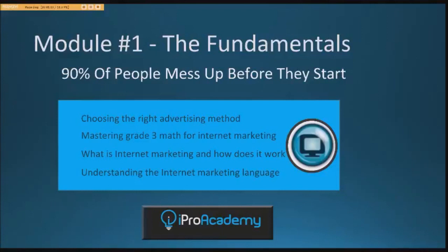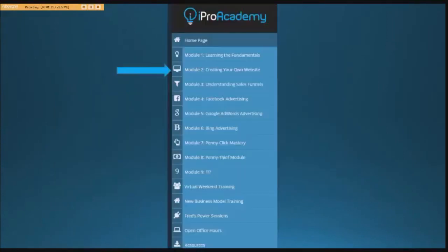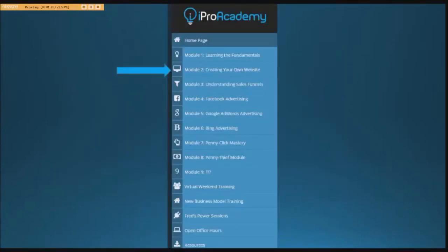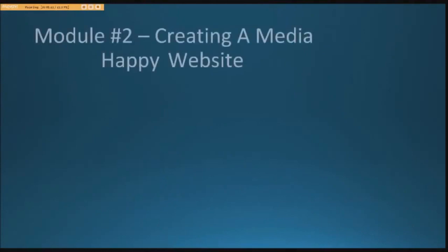Internet marketing is explained as well as the language of internet marketing. Key terms are defined such as landing page, opt-in page, lead generation page, sales letter, pre-sell page, video sales letter, and many more — 23 definitions in all.